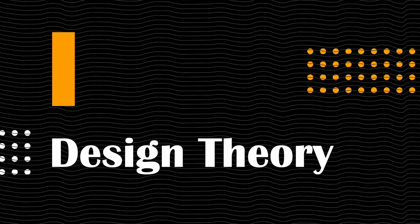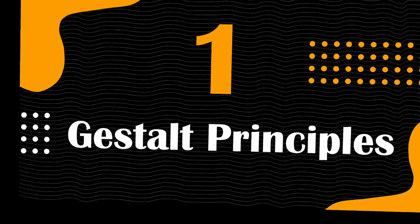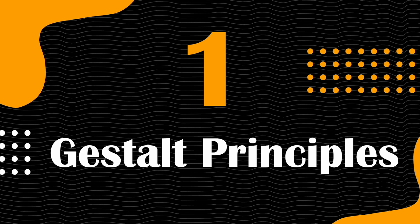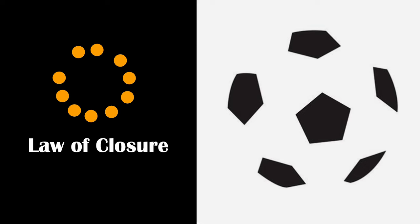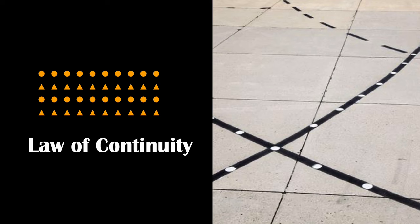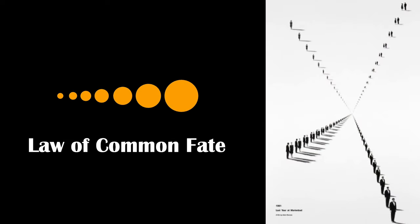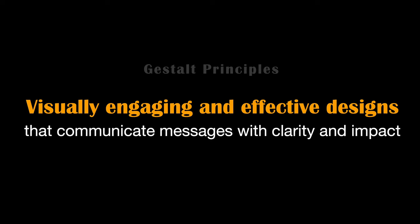Let's check out the terms related to design theory. Gestalt principles are fundamental in the world of design. These principles help us understand how our brains perceive and interpret visual information. The Law of Proximity groups elements close together. The Law of Similarity groups similar elements. The Law of Closure allows our brains to complete shapes. The Law of Continuity guides the viewer's eye with smooth lines. And the Law of Common Fate unites elements moving in the same direction. By applying these principles, designers can create visually engaging and effective designs that communicate messages with clarity and impact.